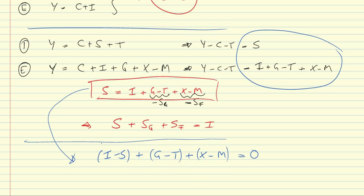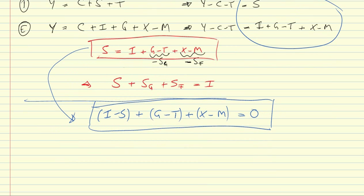We see that these three items, these three differences, have to add up to zero. What are these three differences? We've already argued that G minus T is the negative of government savings and X minus M is the negative of foreign savings. What is I minus S then? It is what we call the private balance. G minus T is the public balance, and X minus M is the foreign balance. So the sum of the private, public, and foreign balance has to be zero.